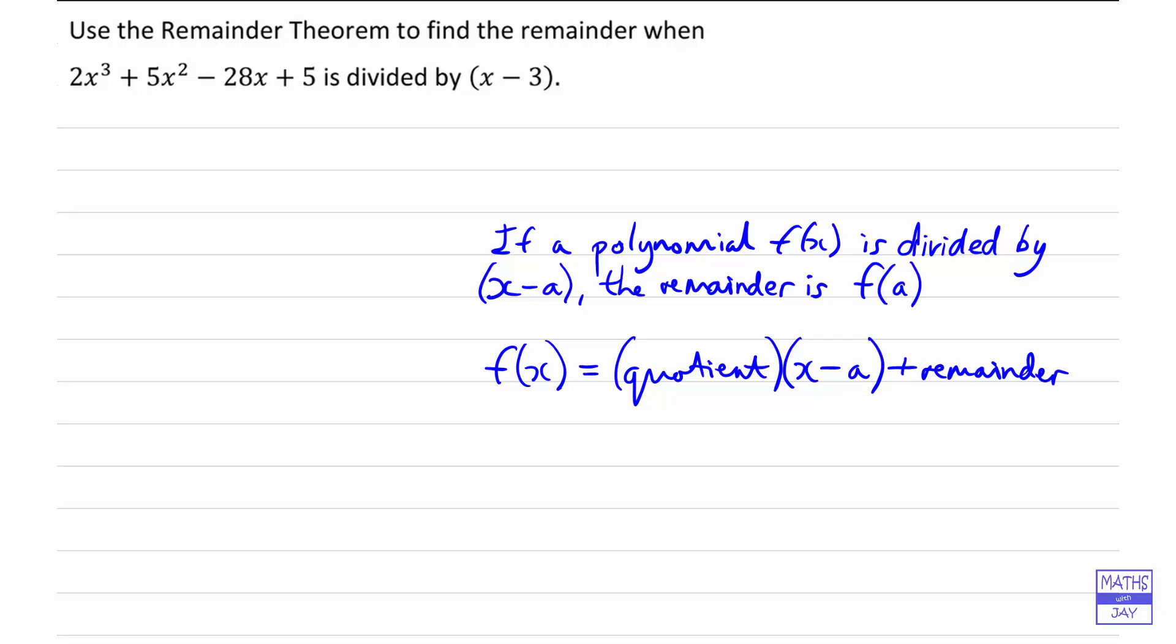And then the really important thing is what we do next. When we put x equal to a, then all we're left with, if you think about it, is whatever the quotient is multiplying, and this is the really important thing, the quotient multiplies zero. So of course all that bit just disappears and all we're left with is the remainder. So we know that f of a is the remainder.